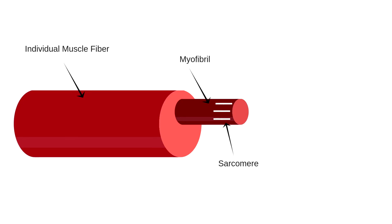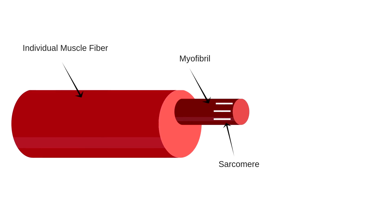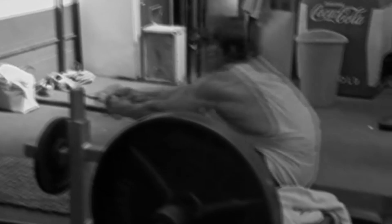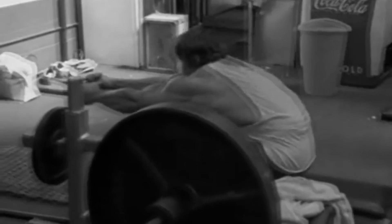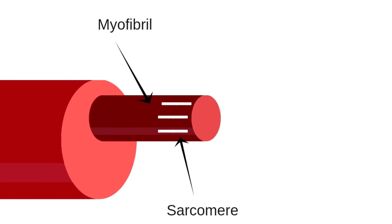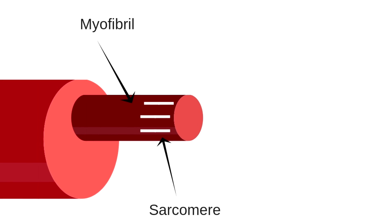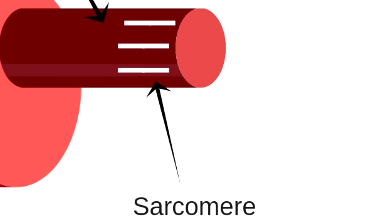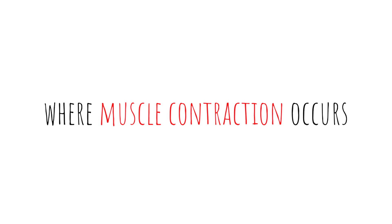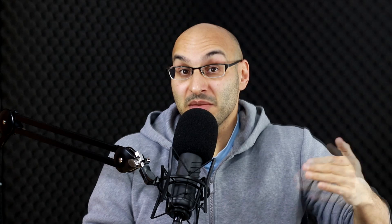Let's go microscopic. Within a muscle fiber, we have a myofibril — a rod, or a unit where muscle contraction takes place. And running along the length of the myofibril, we have what is called the sarcomere. This is the specific site within the muscle fiber where muscle contraction occurs. And in more depth, this is where the sliding filament theory occurs.